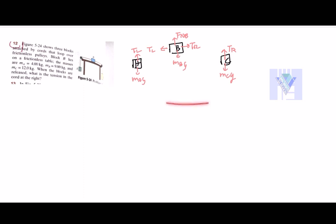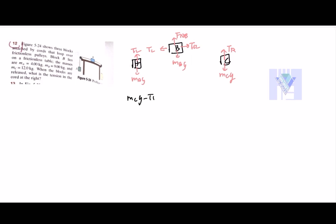Using this diagram, you can compute many equations. For example, you can say MCG minus TR equals MCA, and TR minus TL equals MBA, TL minus MAG equals MAA.